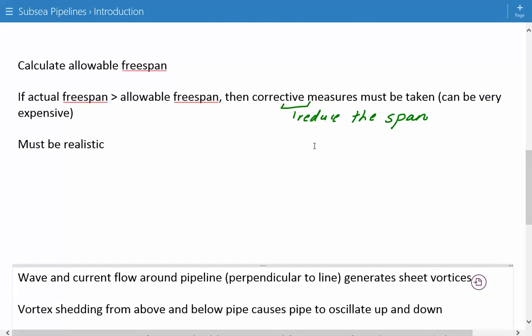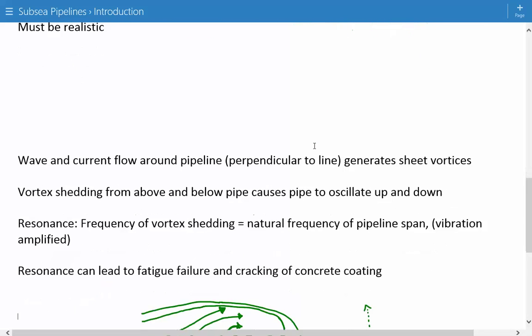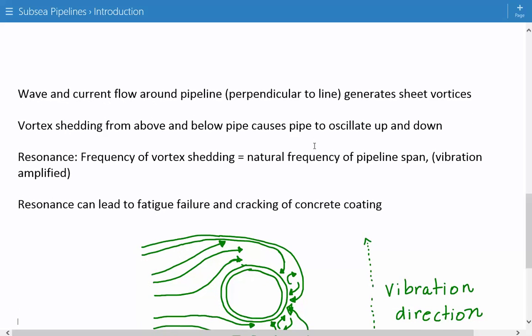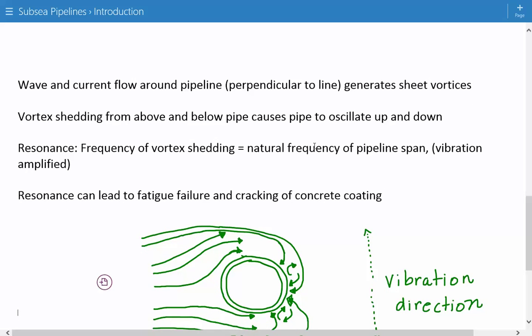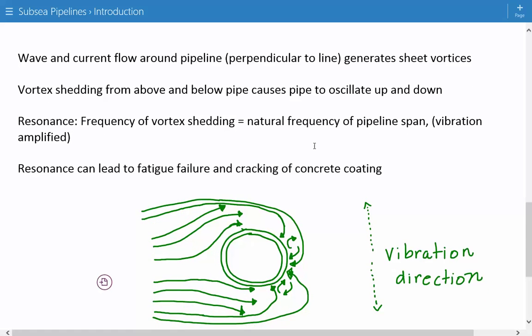So when you have a pipeline span, and there's some type of wave and current flow around the pipeline span, especially perpendicular to the line, it generates sheet vortices. And this shedding, vortex shedding from above and below, causes the pipe to oscillate up and down. And so you can see in the figure, you have these little vortices coming around, and these may cause a pipe to oscillate up and down. So the vibration direction is up and down.